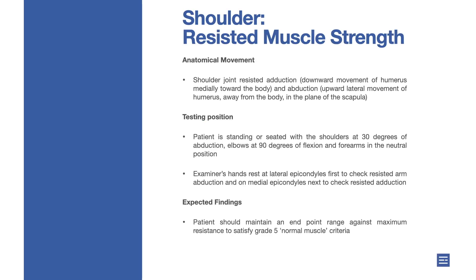Shoulder resisted muscle strength — anatomical movement. Shoulder joint resisted adduction: the downward movement of the humerus medially toward the body.